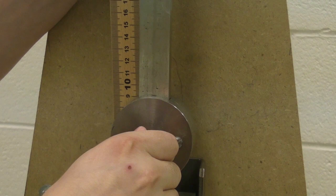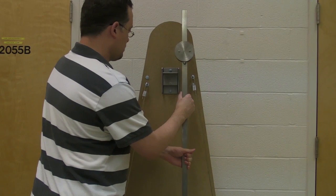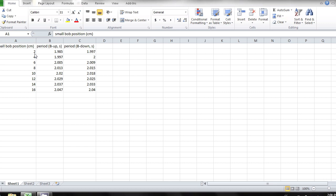Move the smaller bob through a wide range of positions. Each centimeter measure the period and record it as a function of the bob position. At each one centimeter increment measure the period in both the up and down orientations of the pendulum. Ensure that you set down the pendulum gently to avoid damaging the platform.